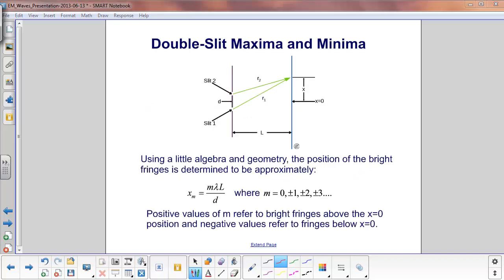Using a little algebra and geometry, the position of these bright fringes is determined. And it is this equation here, x sub m equals m lambda L divided by d. And m is zero, plus or minus one, plus or minus two, etc. This tells you what order the fringe is.